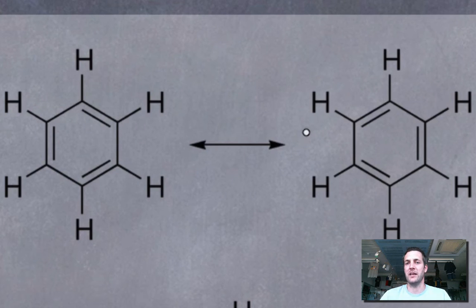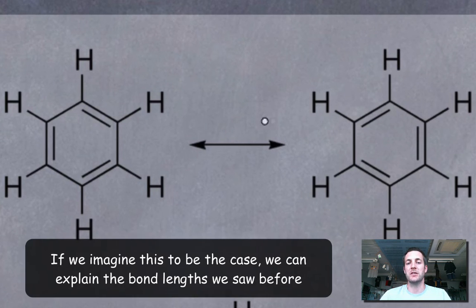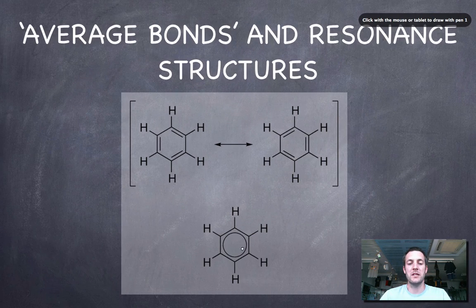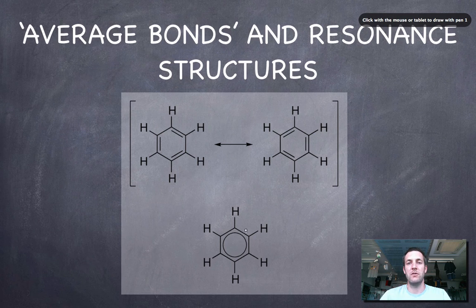It's not quite right to think that the molecule spends as much time like this as it does like that. Actually, the true structure is somewhere between these two, where each one of these bonds is like a one and a half bond. Rather than being a double bond or a single bond, each bond is kind of like a one and a half bond. Benzene is often drawn like this to reflect that.